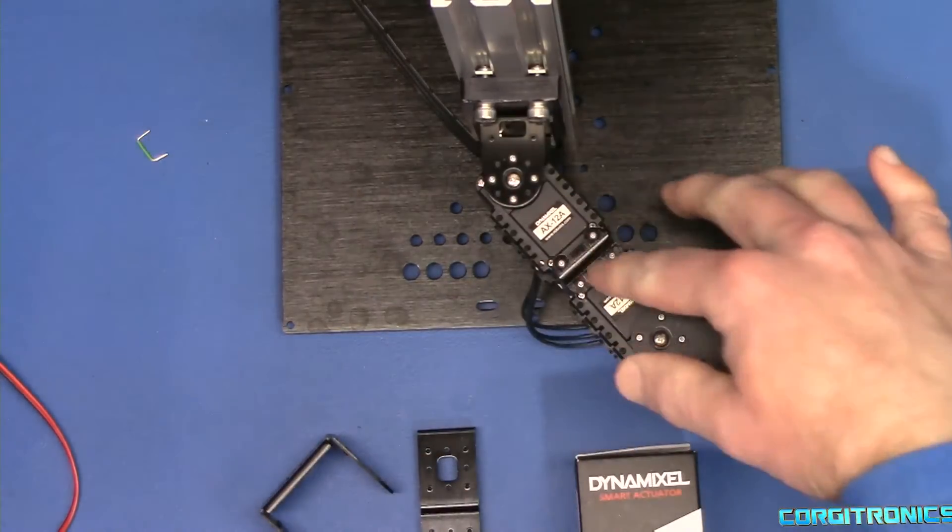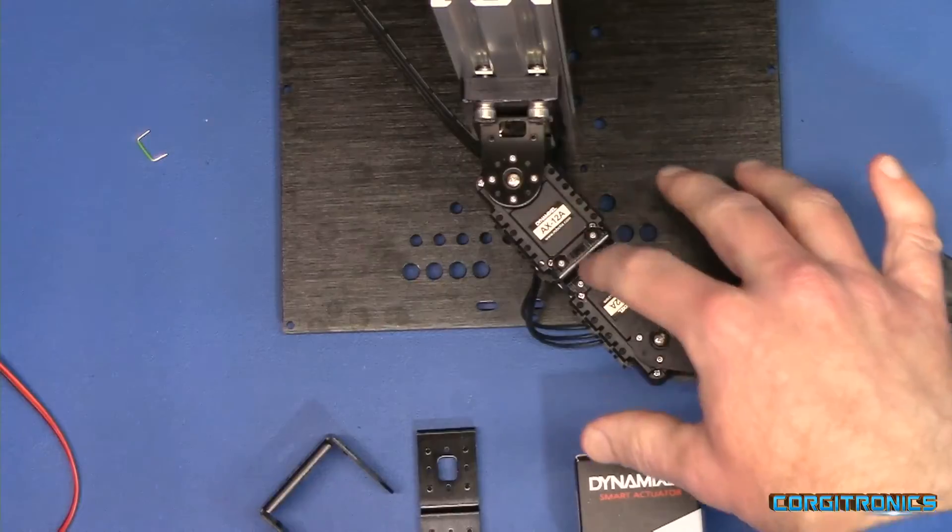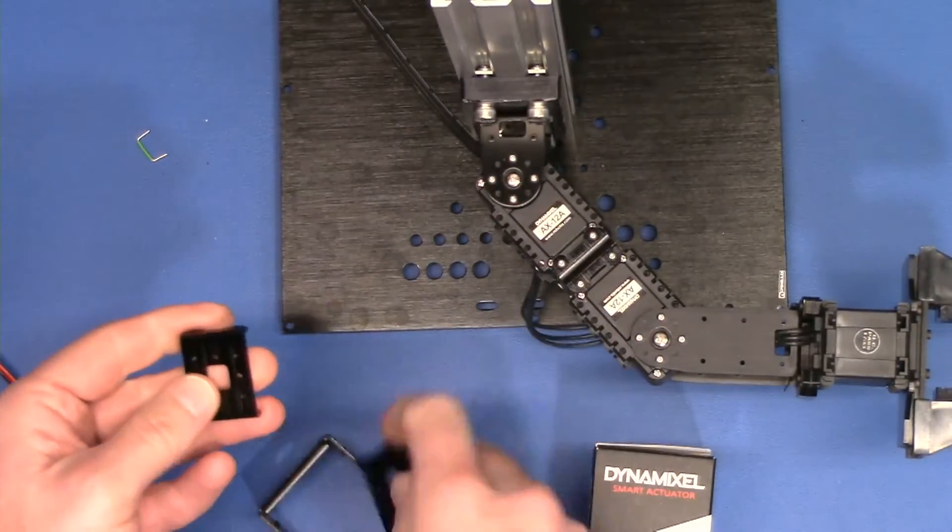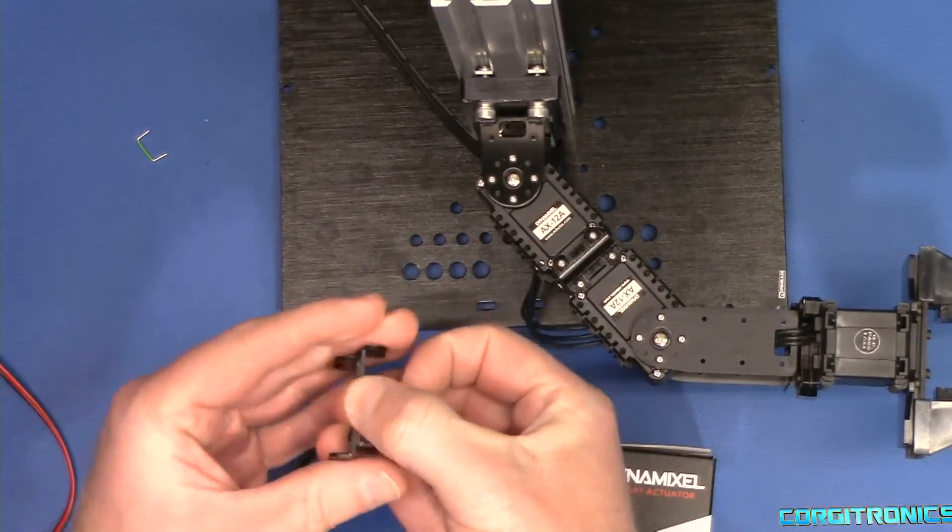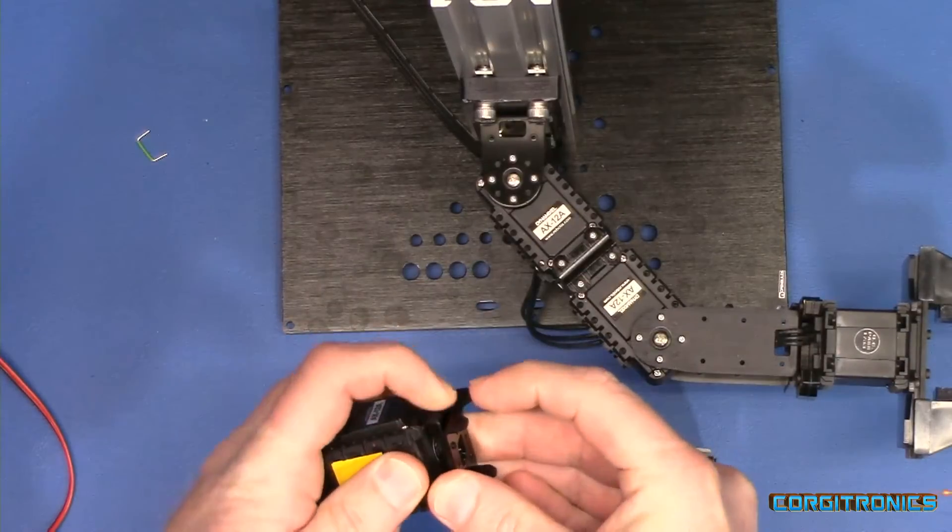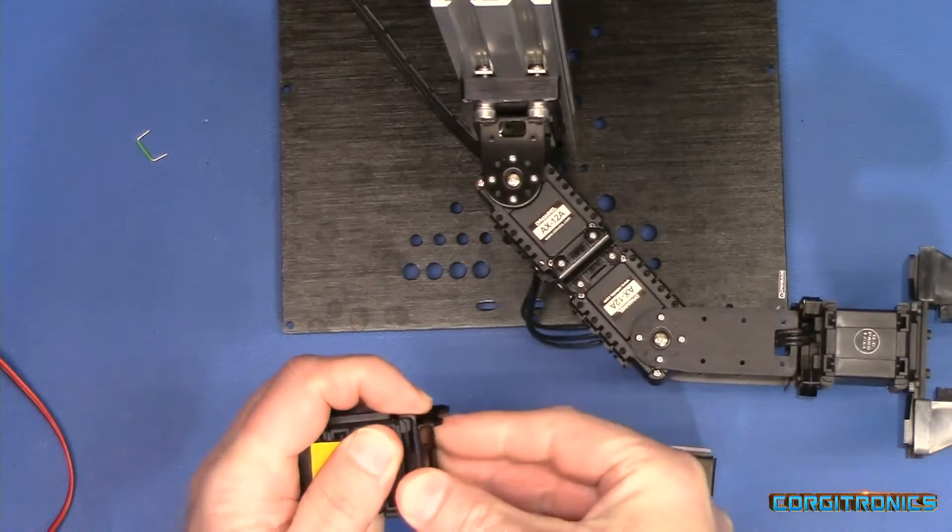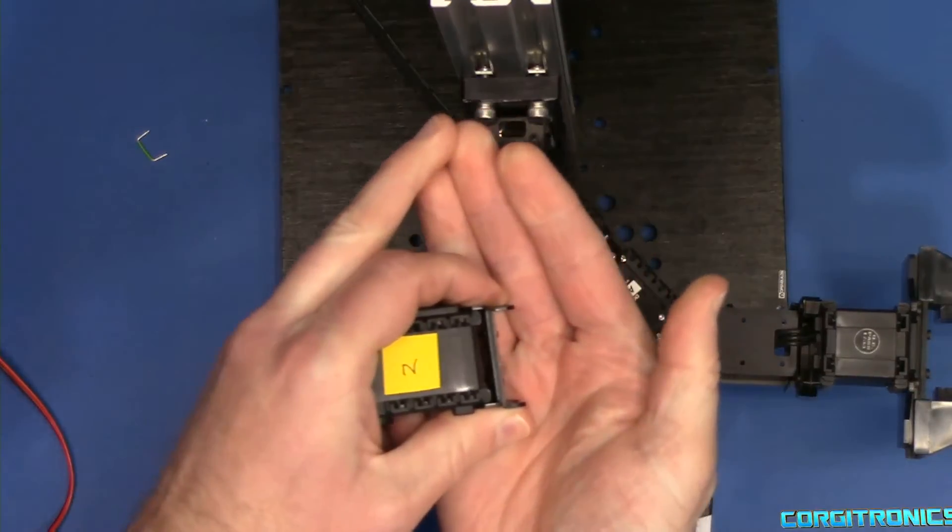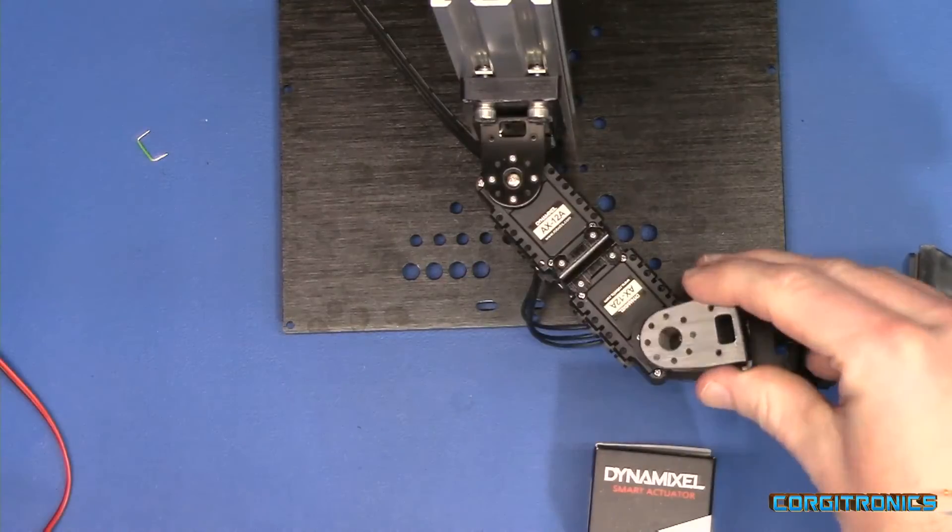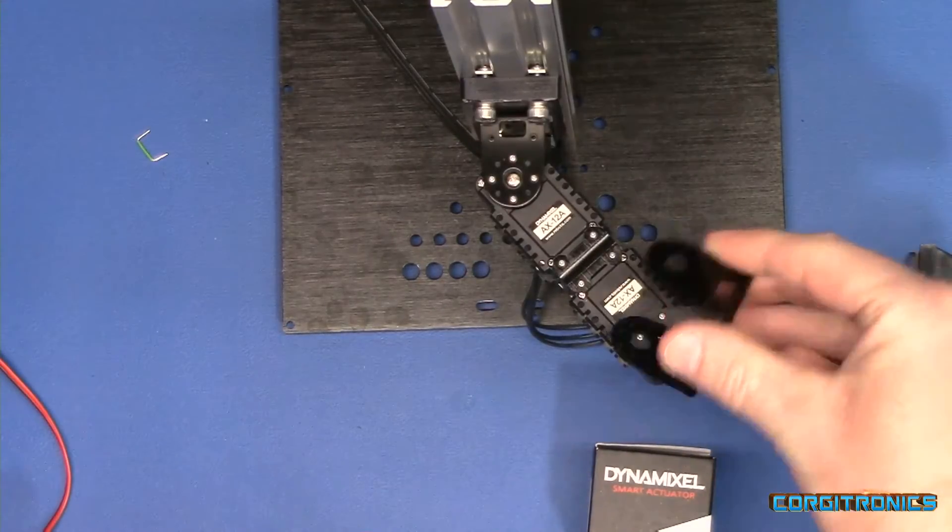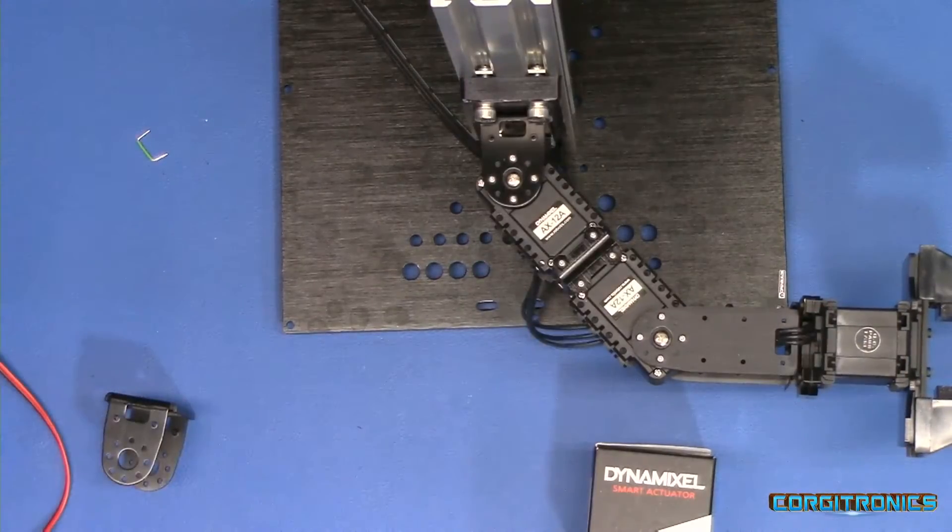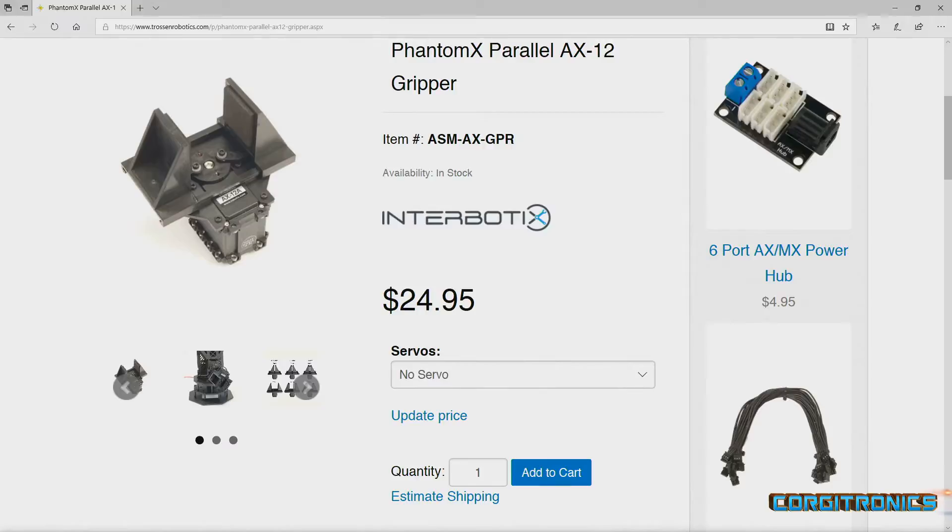What we have here are two Dynamixel servos connected end to end. To do that, I just used these little metal plates and took two of them, attached them together like that, attached them to the servos. It's actually a very snug fit and put two servos end to end. Then on the end of that, we have another one of these little brackets, a longer version. And from there, it's attached to a simple gripper.